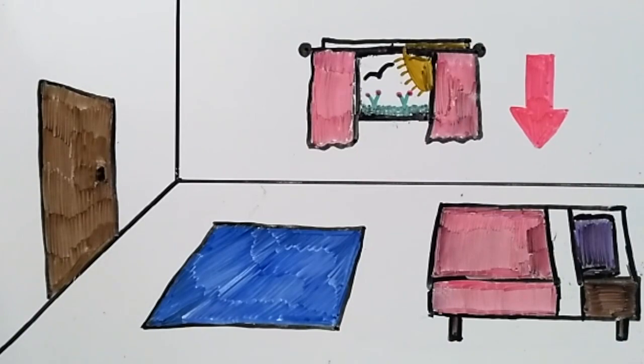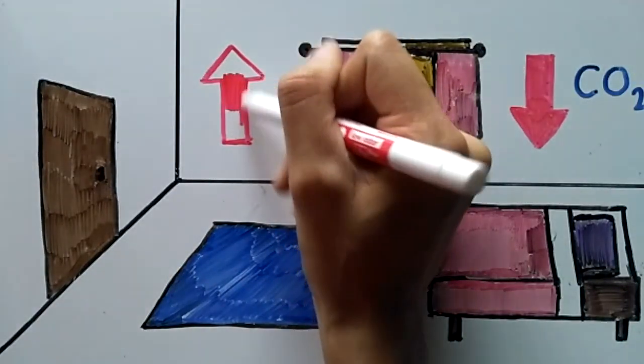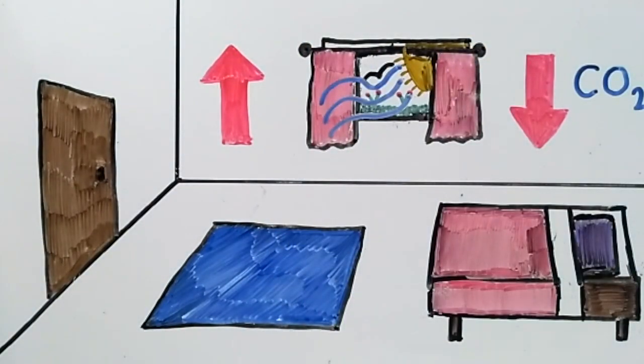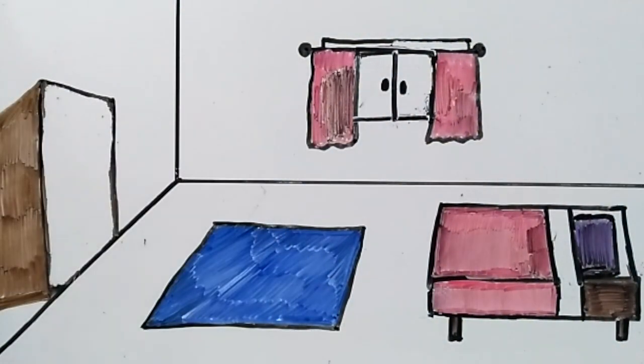Opening your window helps reduce the amount of carbon dioxide and helps improve airflow. Opening the bedroom door can also be a reasonable alternative if you don't like keeping your window open.